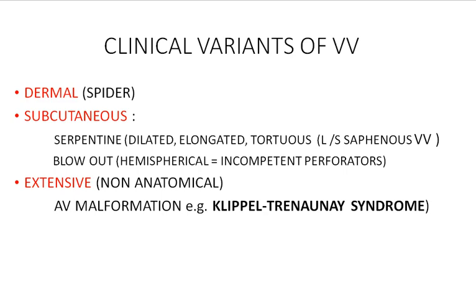The second type present in the subcutaneous vein is blowout. Blowout is a hemispherical varicosity that usually occurs due to underlying incontinent perforators. Sometimes we see hemispherical varicosity at the region of the refluxing saphenofemoral junction, producing what's called saphenovarics — a blowout at the saphenofemoral junction. The last variant is extensive non-anatomical varicositis, which usually occurs in conjunction with arteriovenous malformation; this is a rare syndrome known as Klippel-Trenaunay syndrome.